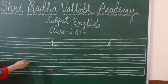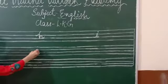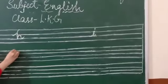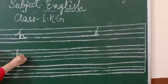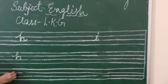Now next letter is H. H for hand. See here. Slipping line, standing line, small circle. H for hand.